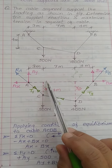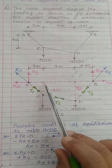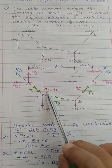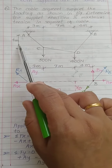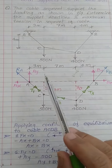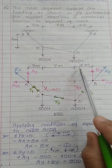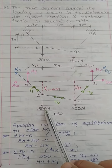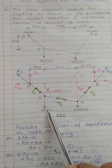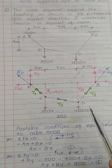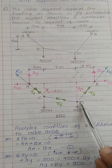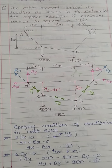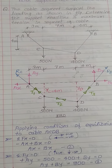The sag at point C is yc = 4 meters. Show all these forces. The load acting at point C is 500 N and at point D it is 400 N.